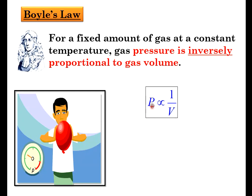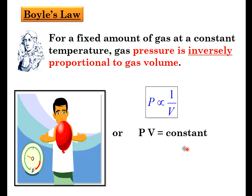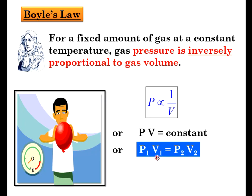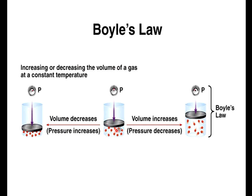From this equation, pressure is inversely proportionate to volume, or PV equals to constant. If there is a first condition and second situation, it's going to be P1V1 equals to P2V2 - this is the equation for Boyle's Law. If you look at the equilibrium condition: if the volume decreases, the pressure inside the container will increase. But if we increase the volume instead, the pressure will drop.